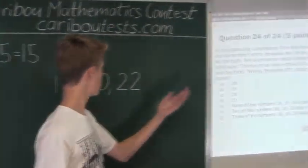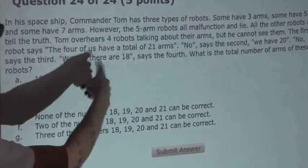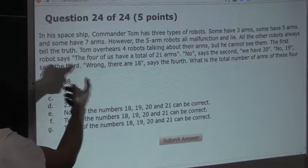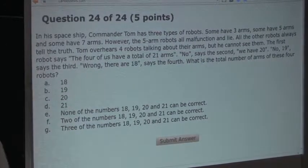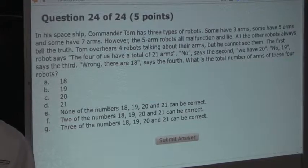which means that one of these statements would have to say there are twenty-two arms. But, if we look at the four statements, we can see that no statement says there are twenty-two arms. Therefore, we know that the fourth robot can only have either three arms or five arms.